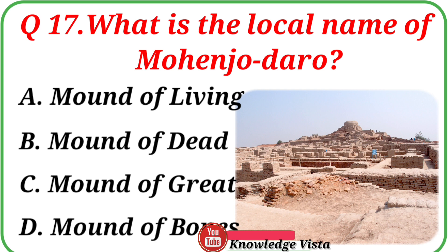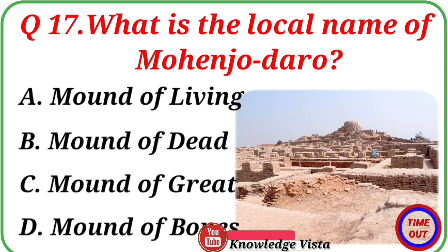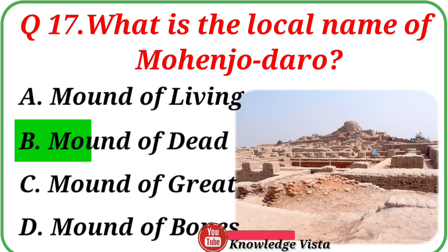Question number seventeen: What is the local name of Mohenjo Daro? Your options are: A. Mound of Living, B. Mound of Dead, C. Mound of Great, D. Mound of Bones. Correct answer is option B, Mound of Dead.